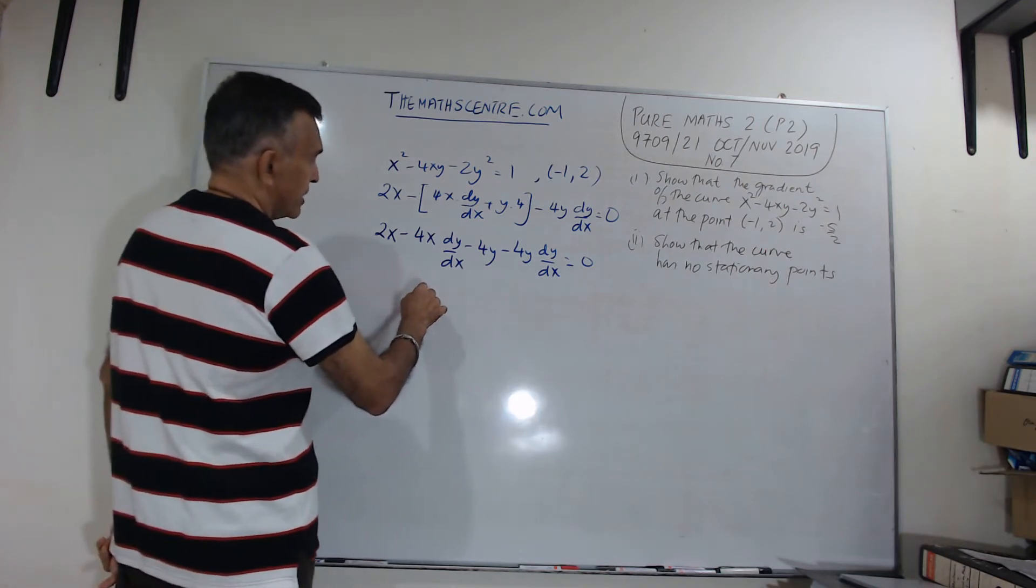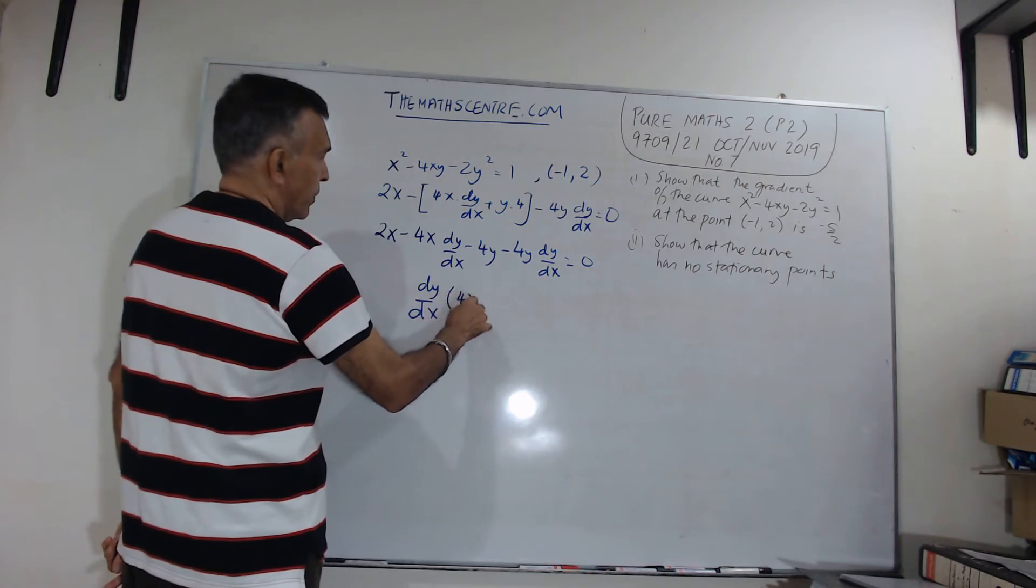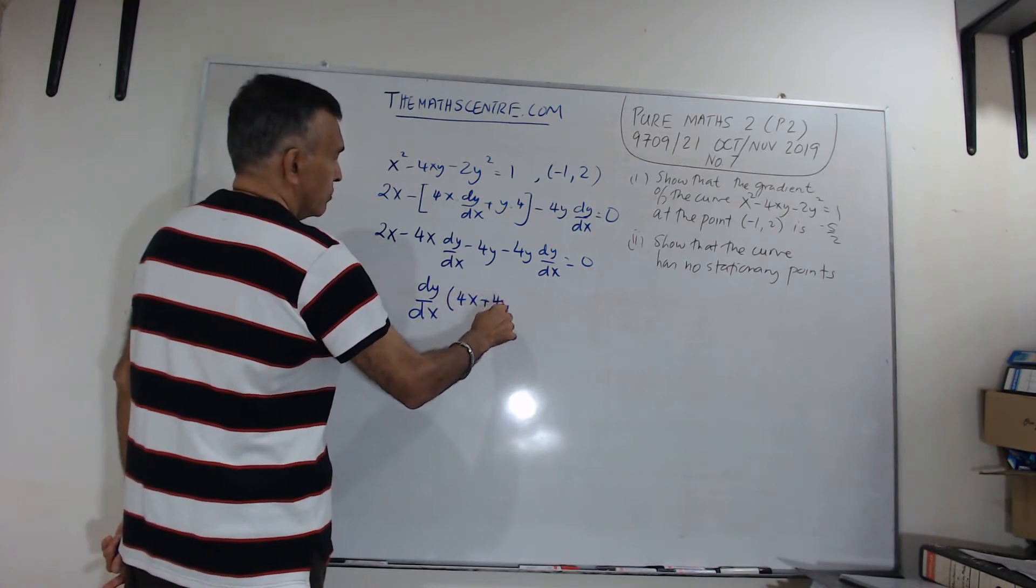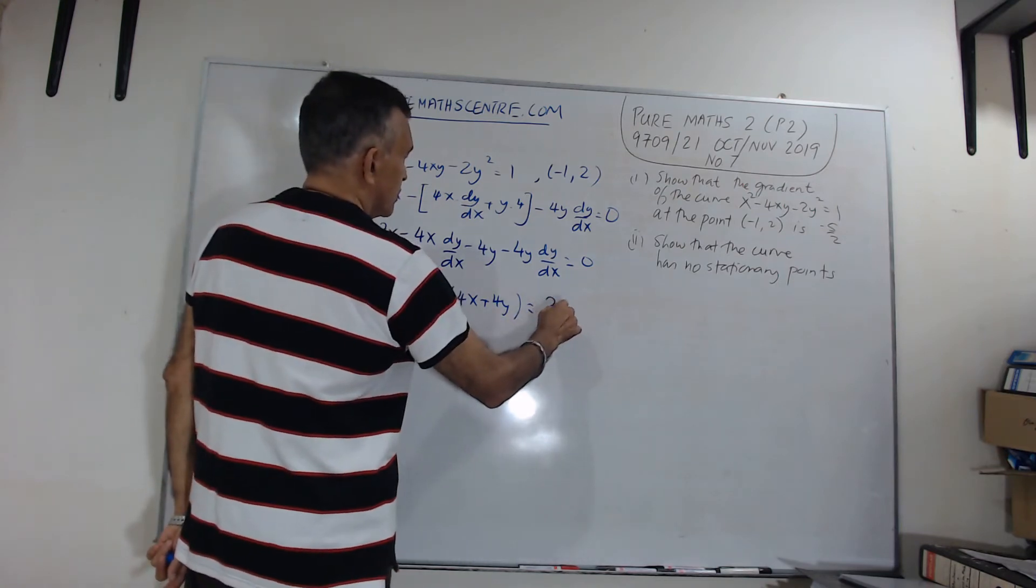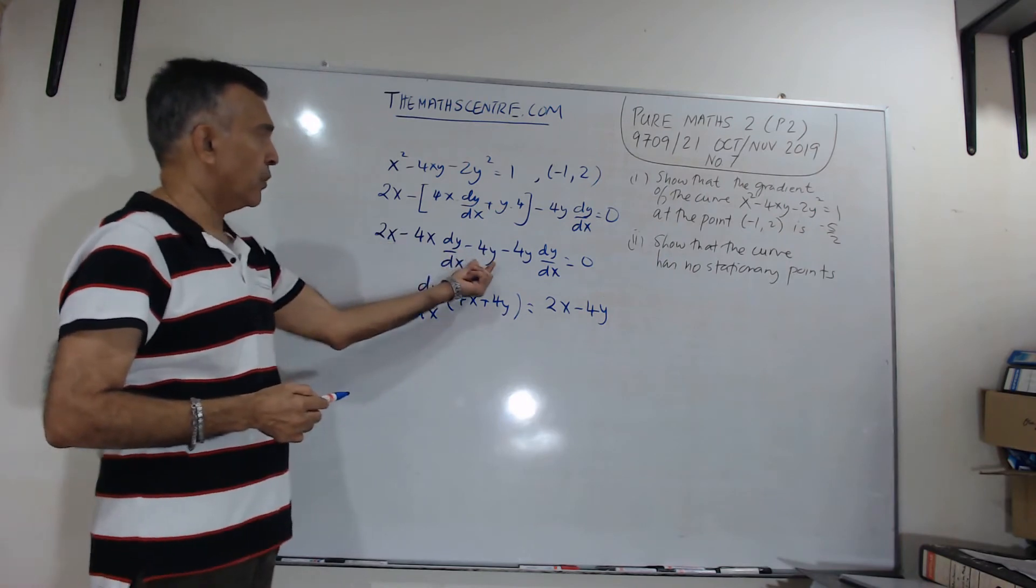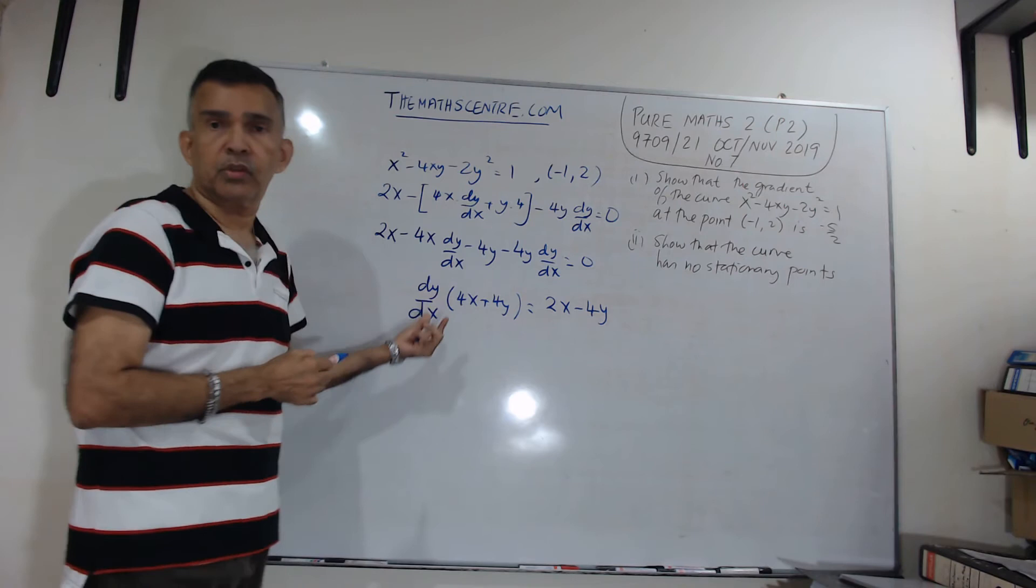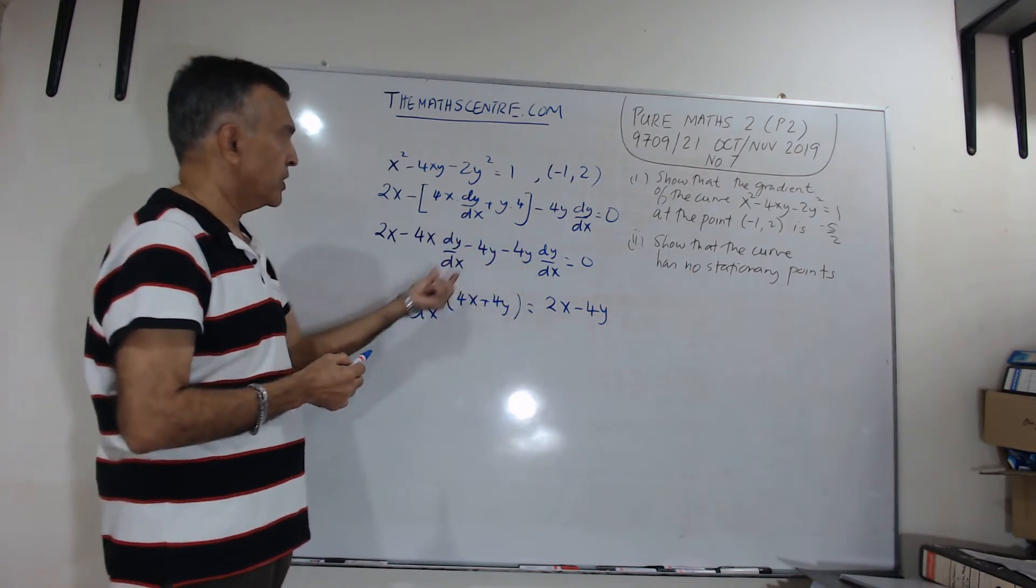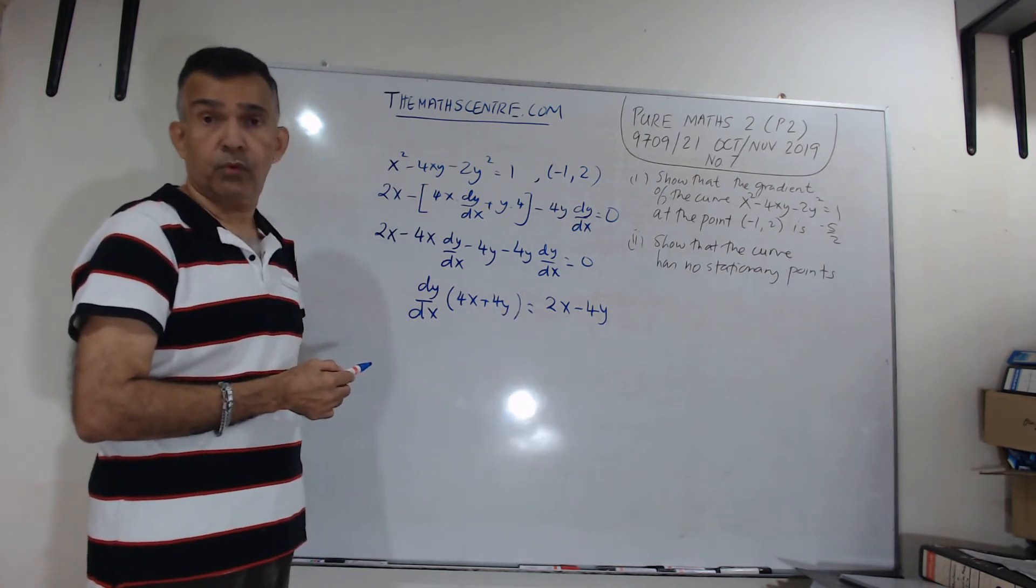So, now, I can write dy/dx, collecting my terms. I have 4x + 4y, move it all to the right-hand side. That will be equal to 2x - 4y. I'm leaving those on the left-hand side. I'm moving the rest of the terms, which contain dy/dx to the right-hand side. So, I'll have dy/dx, 4x + 4y, and that's equal to 2x - 4y.